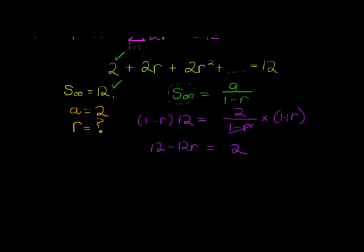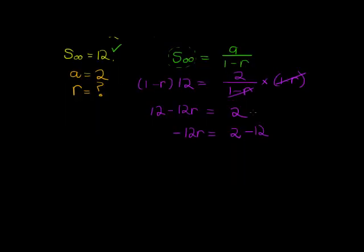On the right hand side they just cancel, so it's just 2. So I get negative 12R is equal to 2 minus 12, that will be negative 10. And negative 10, if I divide both sides with negative 12, I find my answer negative 10 over 12, which can simplify to 5 over 6.